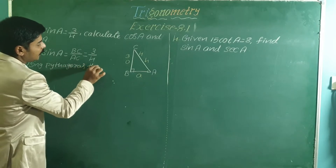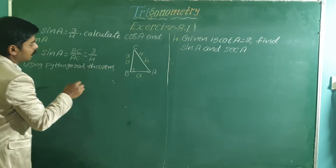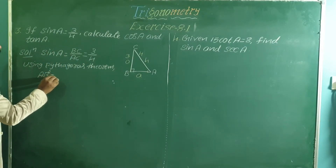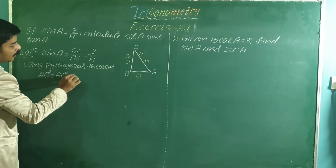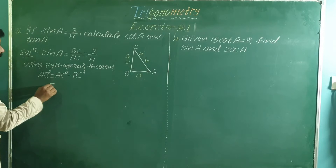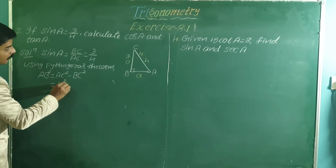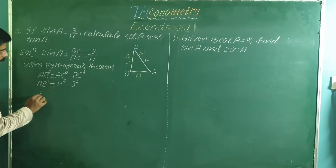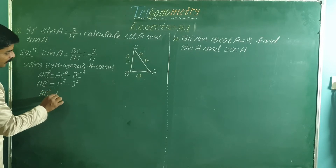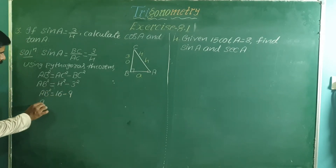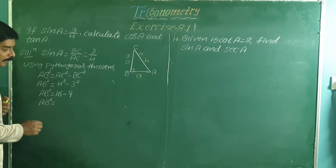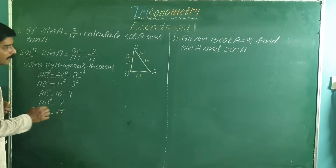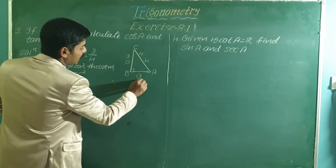Using the Pythagoras theorem, AB squared equals AC squared minus BC squared, which is 4 squared minus 3 squared. That is 16 minus 9, which equals 7. So AB is equal to the square root of 7.